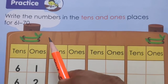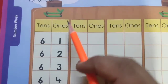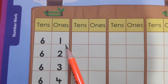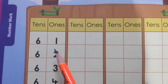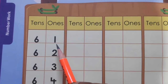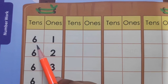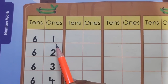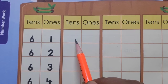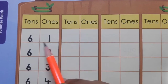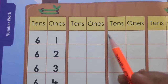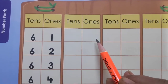So let's start the work. The first number written here is 61. All of you know that in 61, there are 6 tens and 1 one. So what number will we write in the 10s place for 61? We will write 6 in the 10s place and 1 in the 1s place.